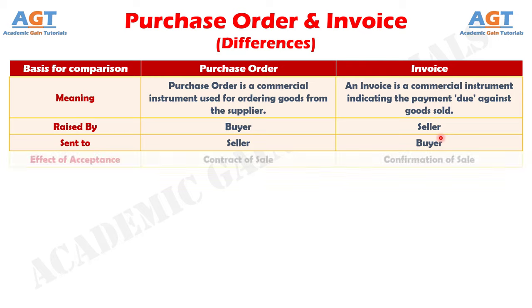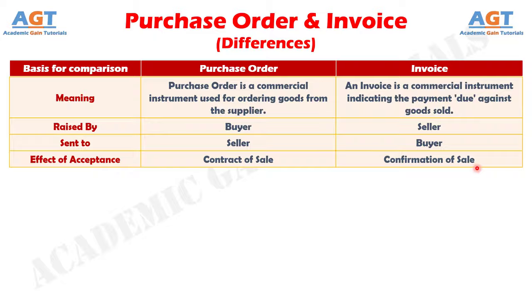And difference number 4: As an effect of acceptance of a purchase order, a contract of sale is obtained, whereas as an effect of acceptance of an invoice, a confirmation of sale is obtained.